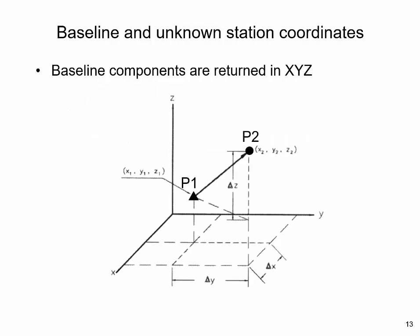The baseline vector between two stations is typically expressed in geocentric X, Y, Z coordinates, shown as delta X, delta Y and delta Z in this figure. To compute the coordinates of unknown stations through baselines, baselines must first be tied to a control station. In this figure, if we assume that station P1 is a control and station P2 is an unknown point, coordinates of station P1 need to be known in geocentric X, Y, Z coordinates to compute the coordinates of P2.